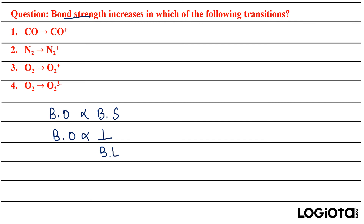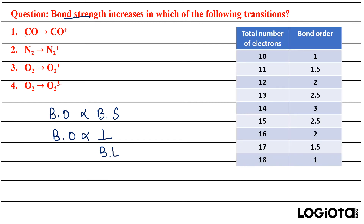The next question asks in which transition bond strength increases. For CO → CO⁺: CO has 8 + 6 = 14 electrons (BO = 3), and CO⁺ has 13 electrons (BO = 2.5), so bond strength decreases. For N₂ → N₂⁺: N₂ has 14 electrons (BO = 3) and N₂⁺ has 13 electrons (BO = 2.5), so bond strength also decreases.